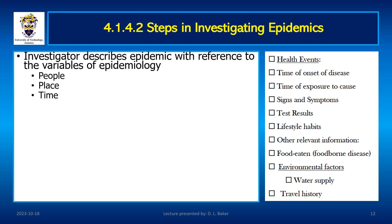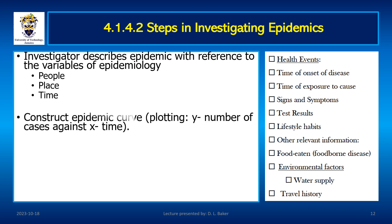Investigators analyze epidemics by considering key variables: people — demographics of affected individuals; place — geographic location of cases; and time — patterns of occurrence over a specific period. By examining these variables, epidemiologists can identify trends, patterns, and potential risk factors. John Snow, a pioneer in epidemiology, constructed the epidemic curve by plotting the number of cases on the y-axis against time on the x-axis. This graphical representation allowed him to visualize the outbreak progression, enabling identification of clusters and patterns crucial for understanding epidemic dynamics and implementing targeted interventions.